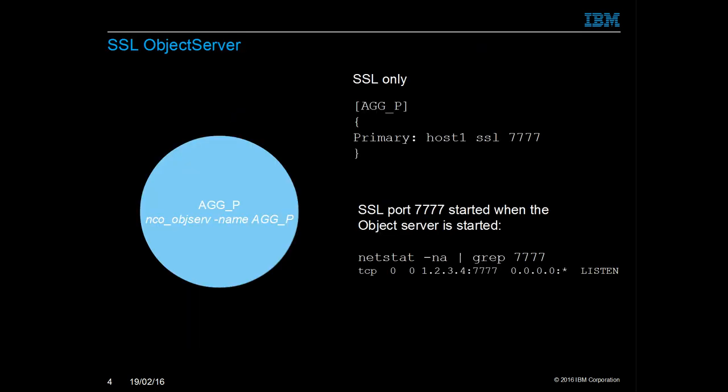The SSL port is defined in the omni.dat file. It is best to only define the SSL port. Once the object server is running, it is this port that is seen in netstat — in this case, port 7777.